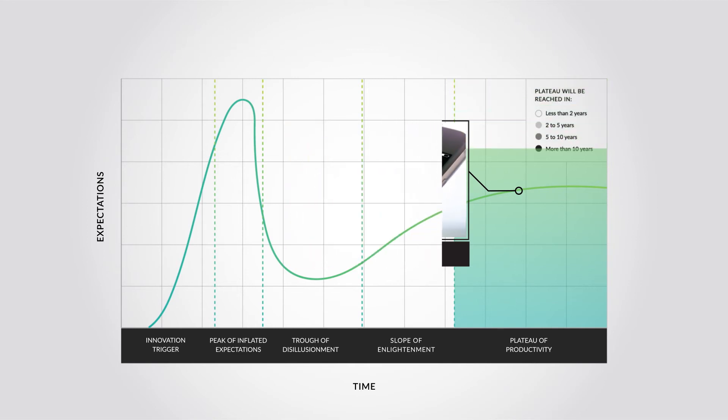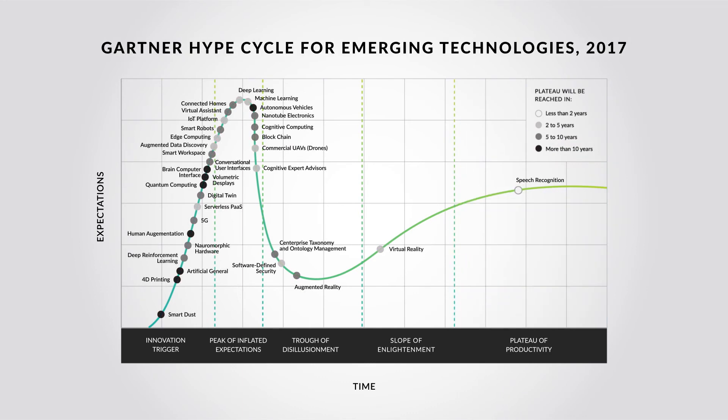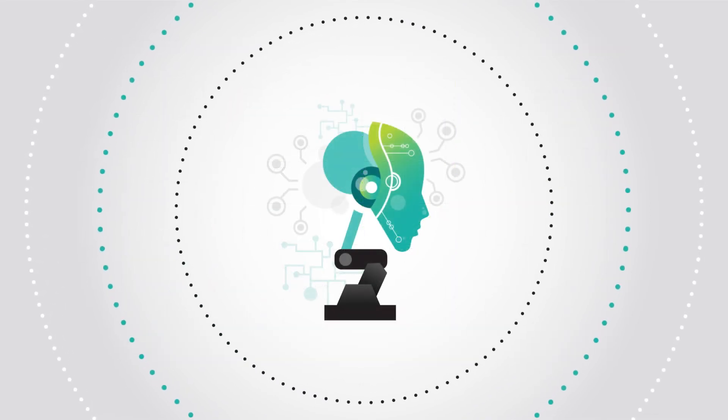The Gartner Hype Cycle helps to depict the buildup and leveling off that new technologies typically go through. It helps us to remember that while the ups and downs of public opinion happen, we must look through them to discern the real promise of a new technology.